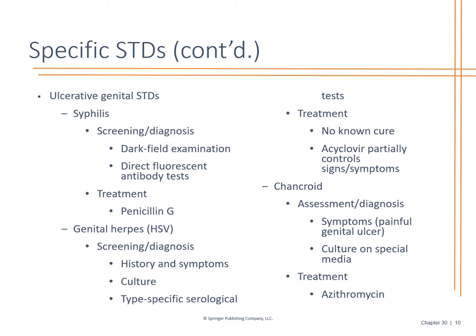Chancroids are painful genital ulcers. Management requires a urinalysis with culture as well as a genital culture. The treatment plan for chancroids is azithromycin (Zithromax).